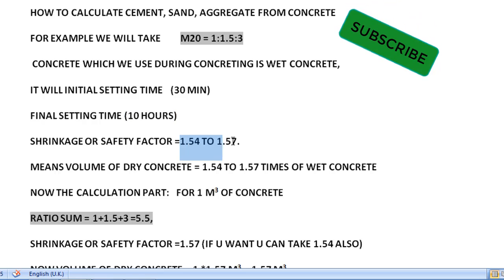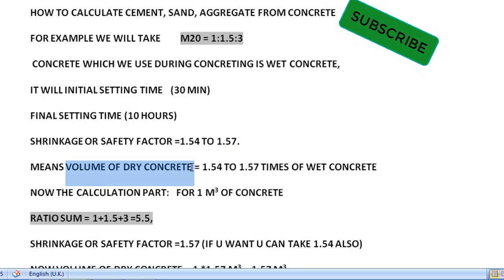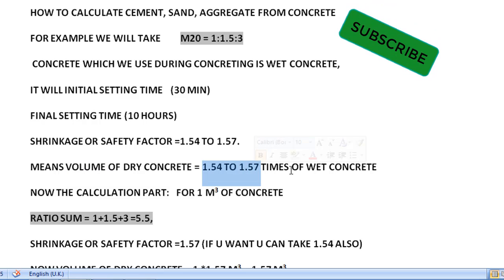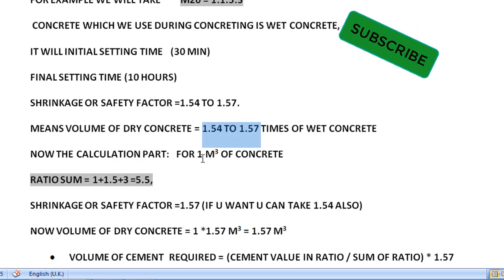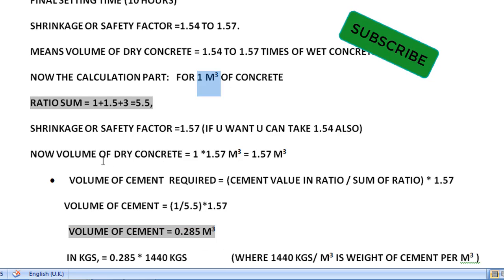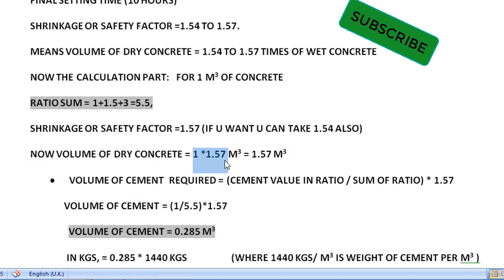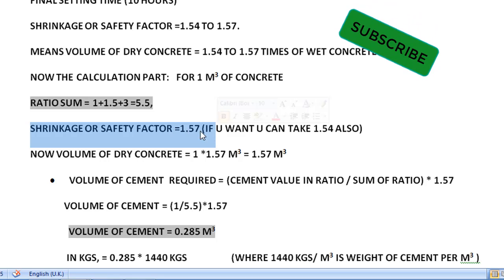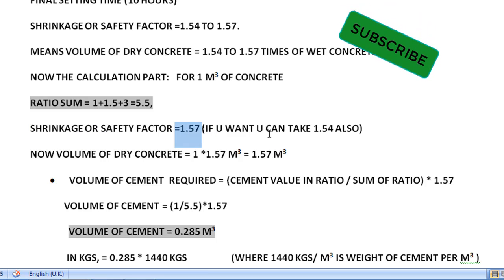Due to shrinkage, a safety factor of 1.54 to 1.57 is applied. The volume of dry concrete is equal to 1.54 to 1.57 times the wet concrete volume. Suppose we need 1 cubic meter of wet concrete — then the volume of dry concrete is equal to 1.57 cubic meters.